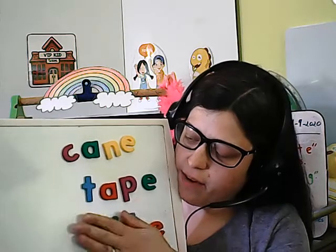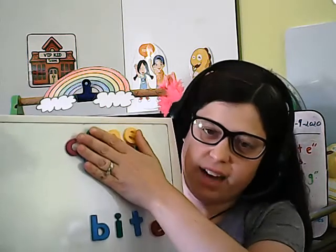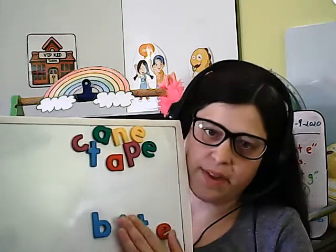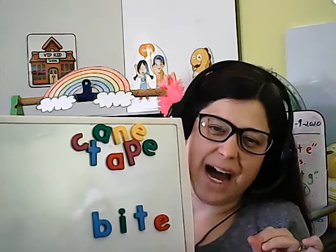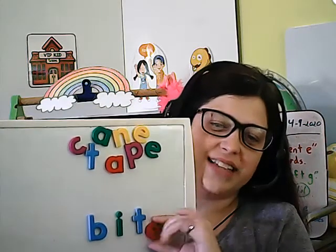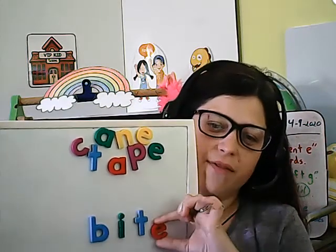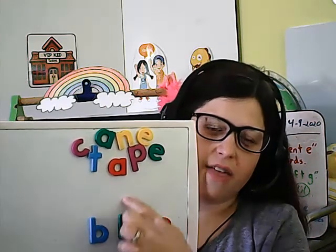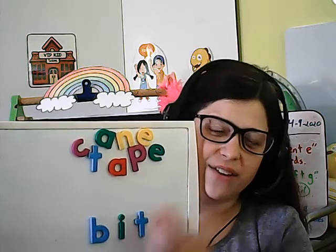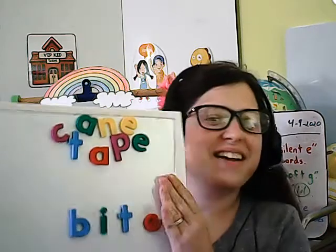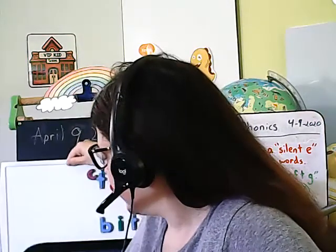And we're going to say the long I sound for this word: B-I-T-E. Bite. So anytime you see that silent E at the end of the word, it changes the other vowel to a long sound, even though you do not pronounce the E sound. Keep practicing, boys and girls — you are getting very good at silent E.